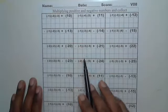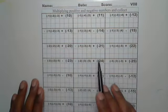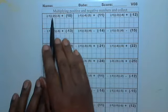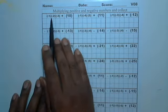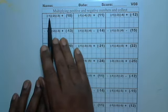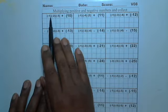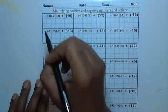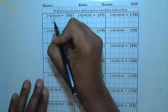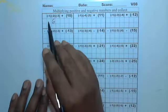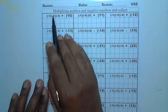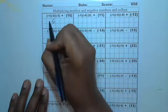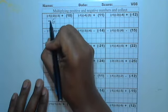Multiplying positive and negative numbers and then collecting like terms. Here we have all multiplication with parentheses, so we're going to multiply 1 times 2, which is 2, and then 2 times 3, which is 6. The number of negatives that we're multiplying by are 3 negatives. If you multiply by 3 negatives, your final answer will be negative.